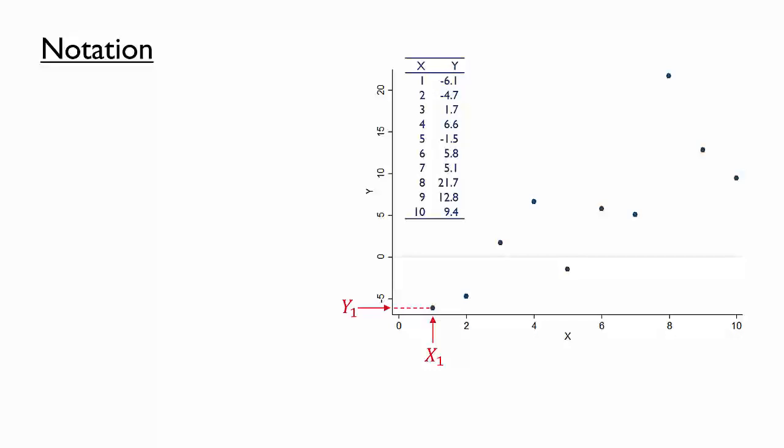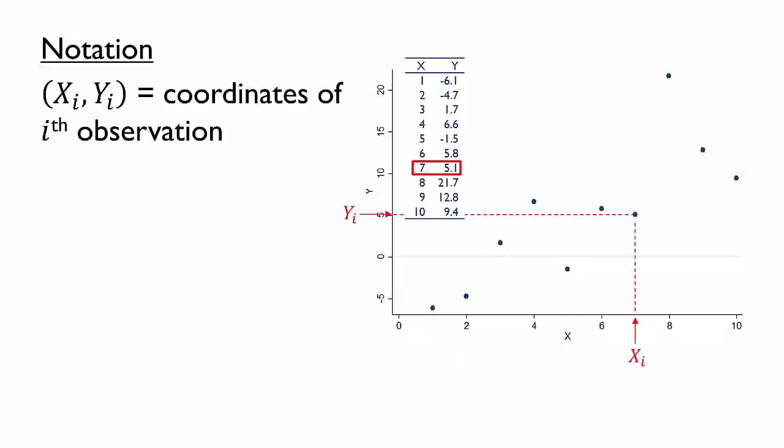We similarly define x₂, y₂, x₃, y₃, and so on. More generally, we could choose a generic observation number, i, so that the coordinates of the i-th observation are xᵢ, yᵢ.